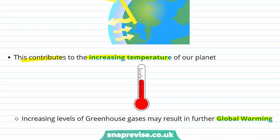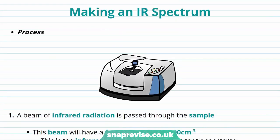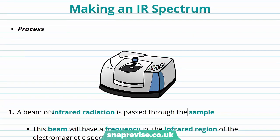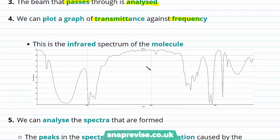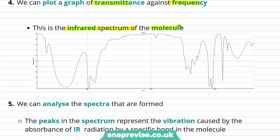Let's take a look at how we can make an infrared spectrum. We pass a beam of infrared radiation through our sample. The beam will have a frequency in the infrared region of the electromagnetic spectrum, and the molecules in our sample will absorb some of the frequencies. Some will pass through, and the beam that passes through and is not absorbed is analysed. We can plot a graph of transmittance against frequency — this is the infrared spectrum of our molecule. The peaks in our spectrum represent the vibration caused by the absorbance of infrared radiation by specific bonds in the molecule.